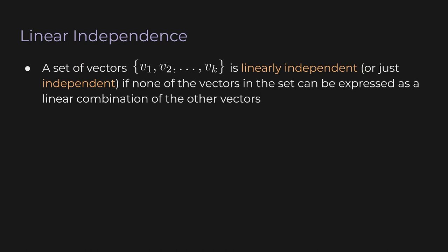The next concept is linear independence. Given a set of k vectors, we say they are linearly independent if none of the vectors can be expressed as a linear combination of the other vectors. So if these vectors are linearly independent, we can't take v1, v3, v4 through vk, scale them, and add them together to somehow get v2.